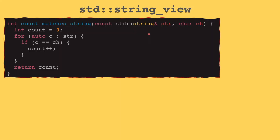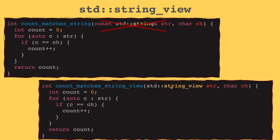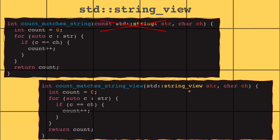String view. If you have a function that takes a string parameter that it doesn't want to change or take the ownership of, you're probably used to set its type to a constant reference of a string. In this video, you will see why it's preferred not to use this and instead use something called a string view, which is much faster and more efficient.